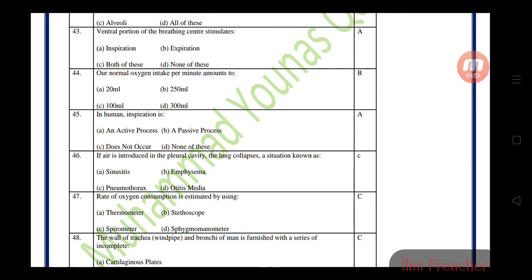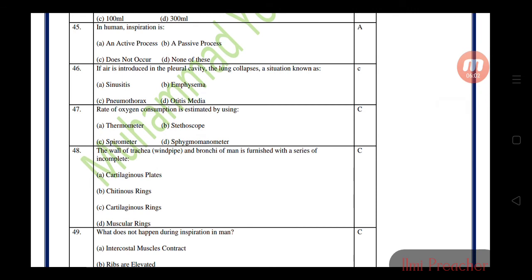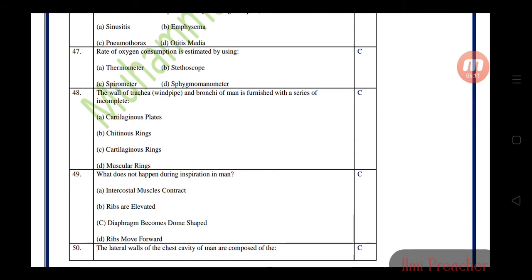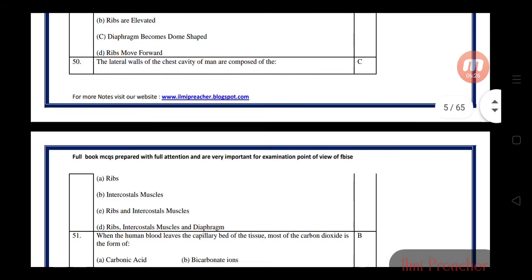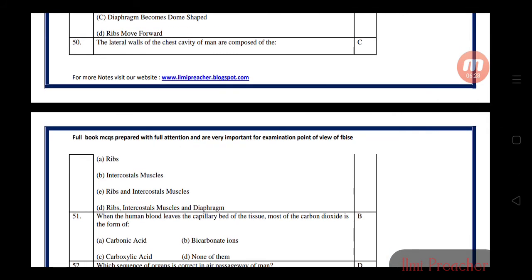In human, expiration is a passive process. If air is introduced in the pleural cavity, the lung collapses - this situation is known as pneumothorax. The rate of oxygen consumption is estimated by using a spirometer. The wall of trachea and bronchi is furnished with incomplete cartilaginous rings. What does not happen during inspiration? The diaphragm does not become dome-shaped; it becomes less dome-shaped during inspiration.